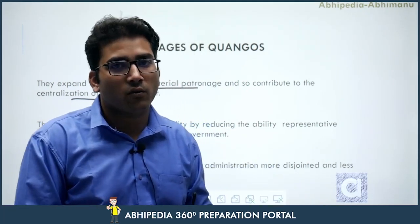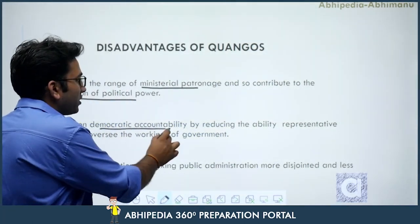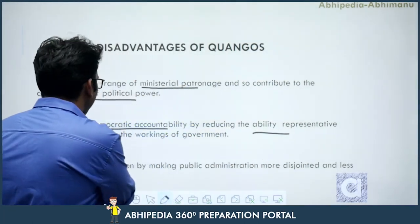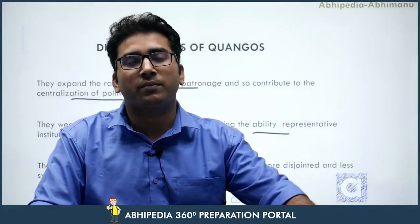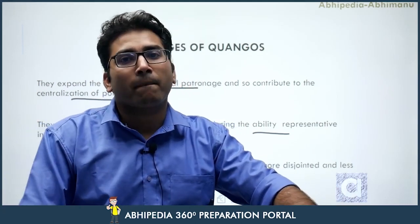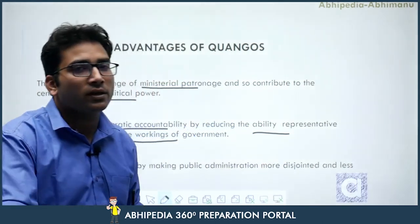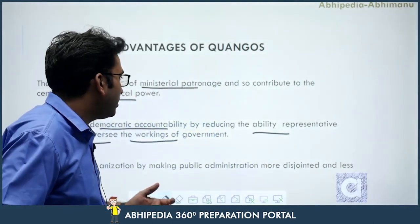Second, QUANGOs weaken democratic accountability by reducing the ability of representative institutions to oversee the workings of government. In a parliamentary or presidential system, the people are represented by legislatures and executives. When non-representative or non-accountable persons enter the government framework, it raises a major question on credibility and checks and balances. The role of QUANGOs is subject to no checks and balance, which can lead to less accountability.